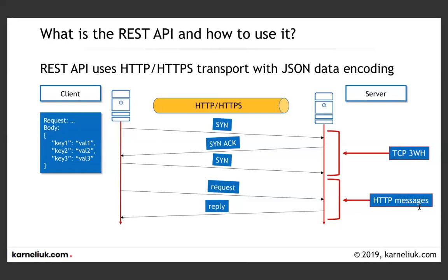Once the handshake is done, the client sends the request to the server and then receives a reply — these are HTTP messages. Your application — whether it's a Python script or an Ansible playbook — acts as the client. Using specific models, you can grab information and then parse it directly as a Python dictionary or store it in an Ansible variable for further use.